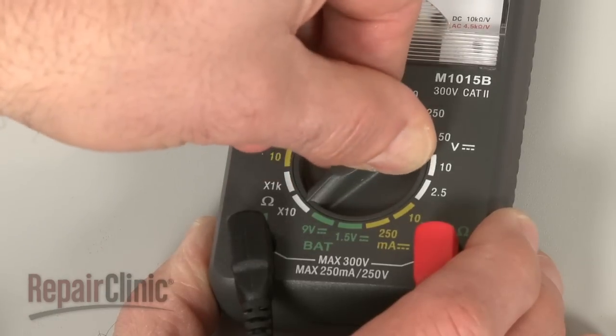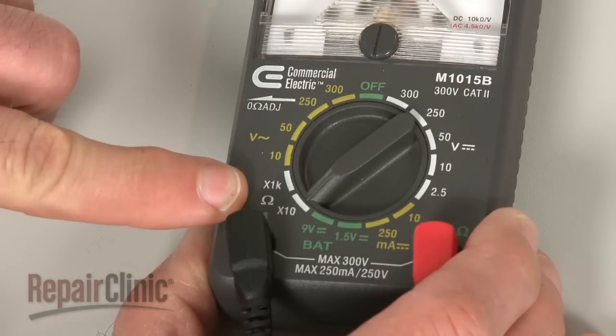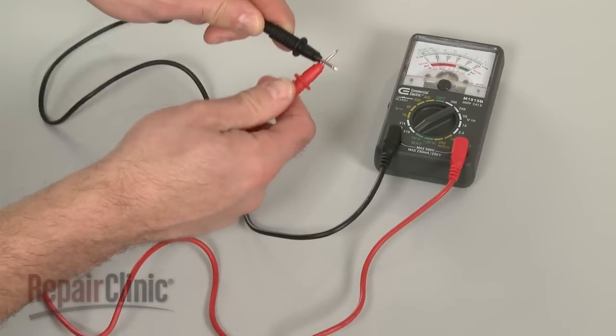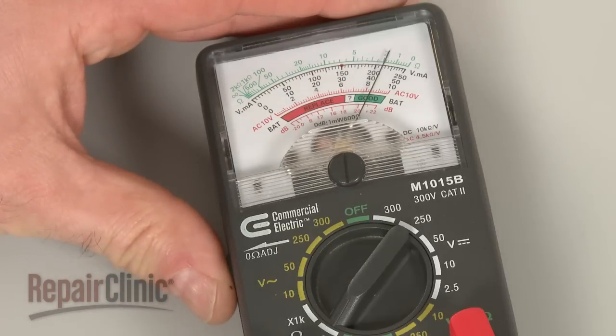When using an analog model, first rotate the range selection dial to the lowest setting for ohms of resistance. Then calibrate the meter by pinching the probes together while adjusting the needle to read zero.